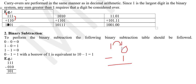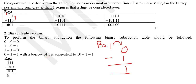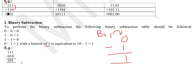For binary subtraction: 0 minus 0 is 0, 1 minus 0 is 1, 1 minus 1 is 0. For 0 minus 1, since we cannot subtract a larger number from a smaller one, we borrow from the next bit — borrow makes it 10 in binary, which is 2, so 2 minus 1 is 1. This is how borrowing works in binary subtraction. This is binary arithmetic and covers all the key aspects of number systems.